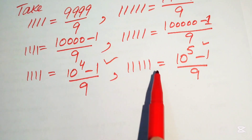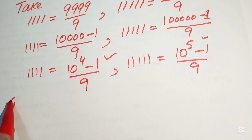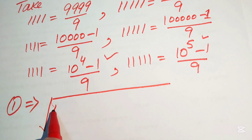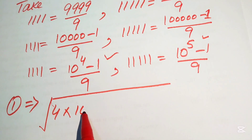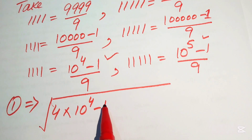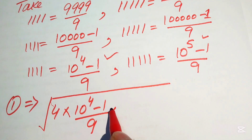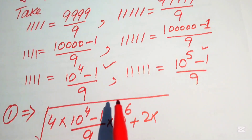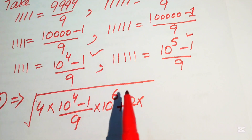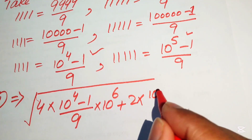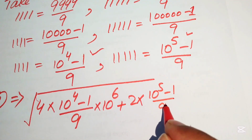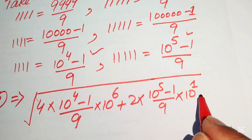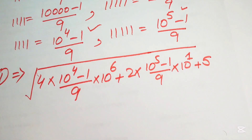Substituting into equation 1: square root of [4 × (10^4 − 1)/9 × 10^6 + 2 × (10^5 − 1)/9 × 10^1 + 5]. So we replace both repunits with their respective (10^n − 1)/9 forms.